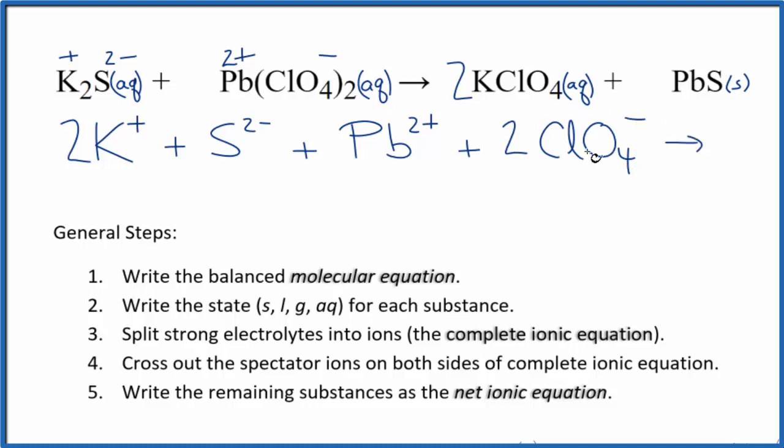These are the reactants in our net ionic equation. For the products, we have two potassium ions just like the reactants, plus we have two of these perchlorate ions also like the reactants. And then we have PbS. We don't split solids apart as a precipitate here. We don't split this apart in a net ionic equation, so we just keep it together, PbS.